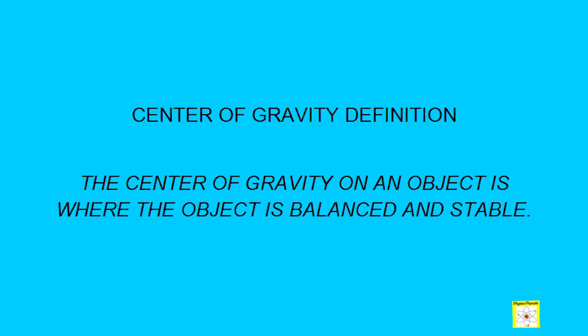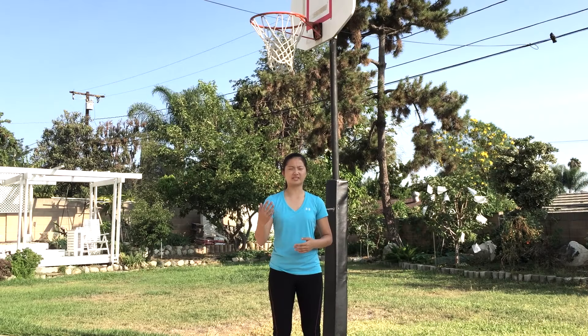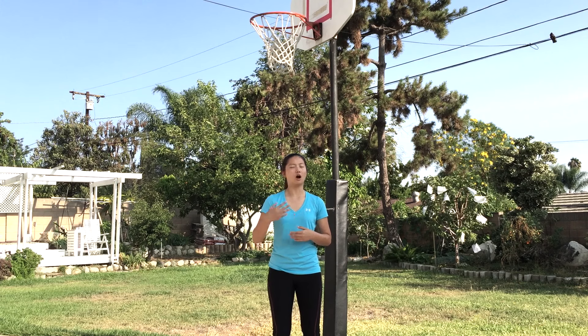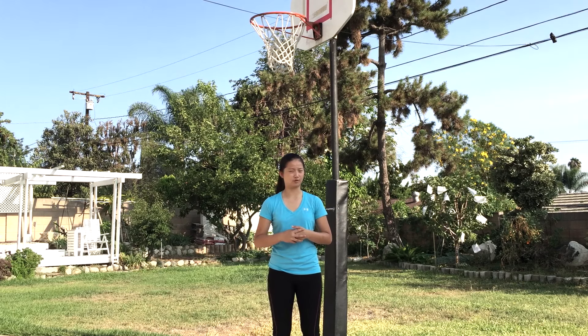The center of gravity on an object is where the object is balanced and stable. What do stable and balance mean? In simple terms, stable refers to being hard to knock down, while balance means that the object's weight is distributed evenly around that point we refer to as the center of gravity.